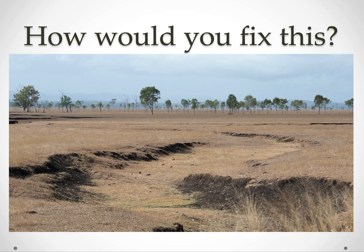Here is another picture of some new erosion. After seeing the previous slides, how would you fix this? Well, leaky weirs would be the most effective. You still want the water to flow, but you just want it to slow down. And if the leaky weir is very effective, the water would probably overflow from that gully into the surrounding landscape and rehydrate the soil.